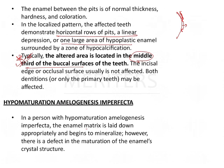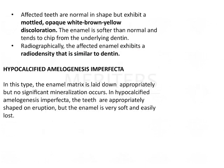In hypomature amelogenesis imperfecta, the enamel matrix is laid down appropriately and begins to mineralize. However, there is a defect in the maturation of the enamel's crystal structure. Normally, with time, the crystals of the enamel begin to increase in size, but in this case there is no such increase, and because of that the enamel is a little softer and weaker.